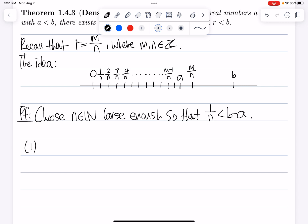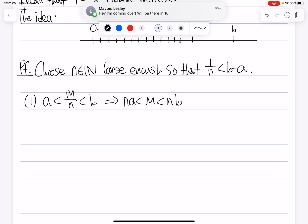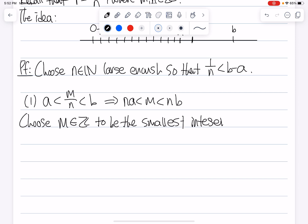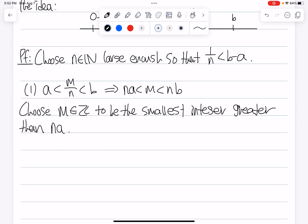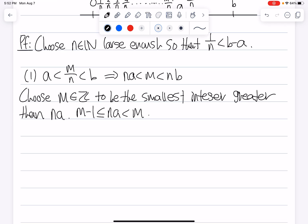The inequality we want to essentially prove is that A less than M over N less than B. This is the same thing as saying NA is less than M and M is less than NB by just multiplying each side by N. So now our choice is to choose M in Z to be the smallest possible integer greater than NA. So this yields a consequence of M minus 1 being less than or equal to NA and NA being smaller than M. We are choosing M to be the smallest integer that is greater than NA. What that means is M minus 1 is not going to be greater than NA, so M minus 1 has to be less than or equal to NA. And this is the important choice of our M, which is going to help us in our proof.